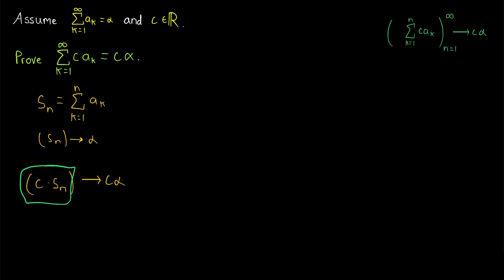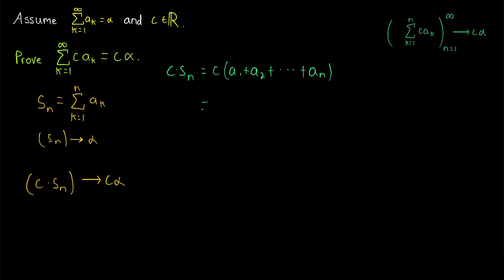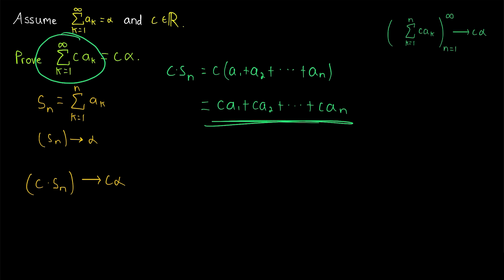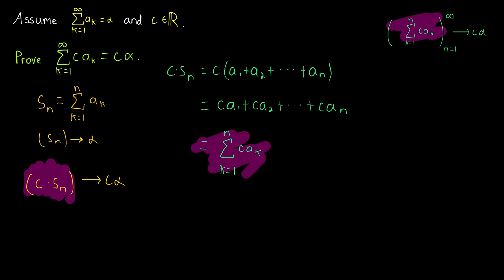To prove that this sequence is the same as this one, we'll take an arbitrary term. An arbitrary term c times Sn would be, by definition, c times the nth partial sum of our series — that's c times (a1 + a2 + ... + an). Then, by the distributive property, this equals c·a1 + c·a2 + ... + c·an. As you can see, this is by definition the nth partial sum of the series Σc·aₖ from k=1 to n, meaning it's the nth term of that sequence of partial sums.